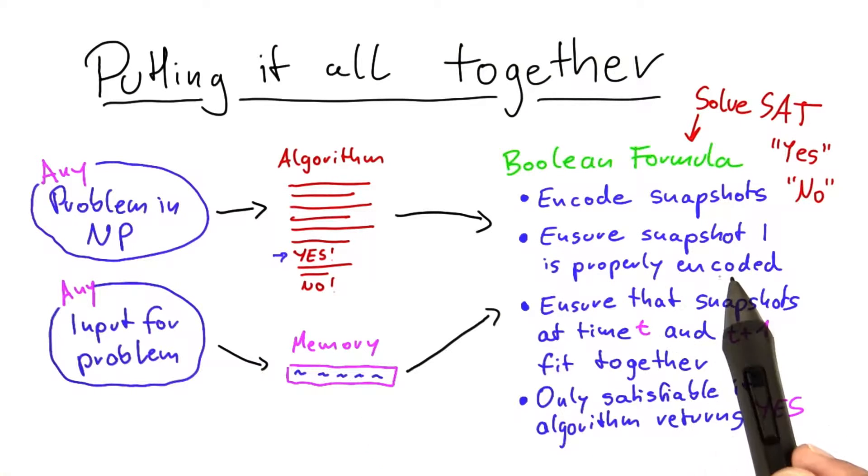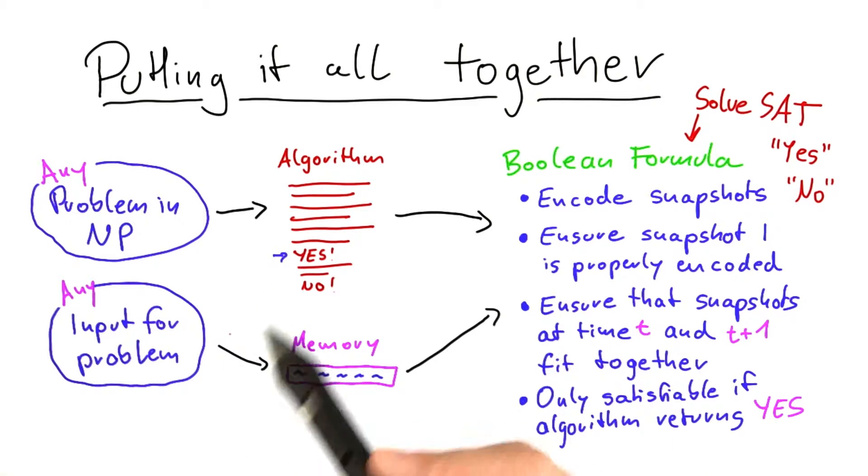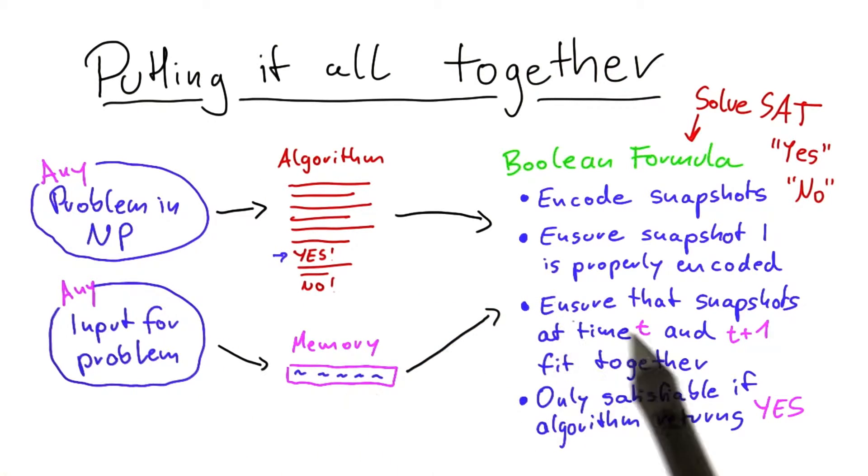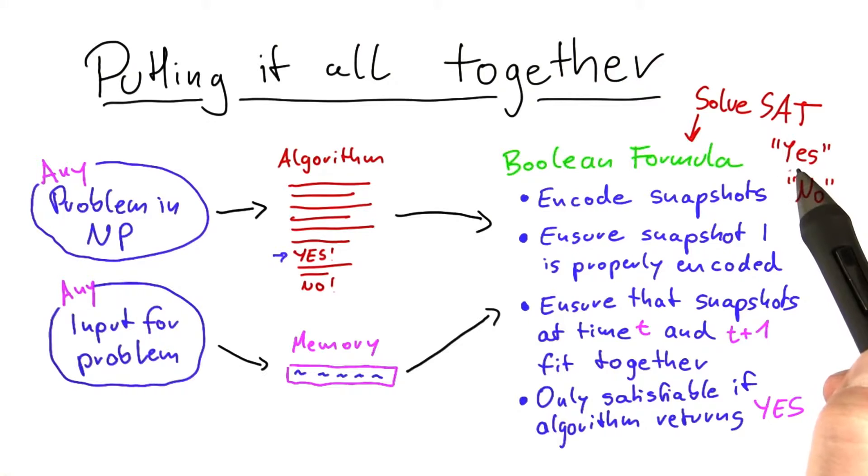Secondly, it will also ensure that the machine starts out in the right place, meaning it starts out at line one of the code and representing the input for the problem. It will ensure that all of the snapshots that it has figured out will fit together. And it can only return yes if the algorithm returns yes at some point in time.